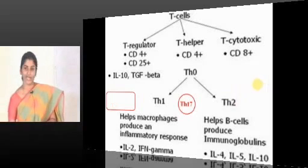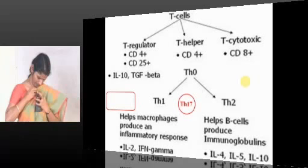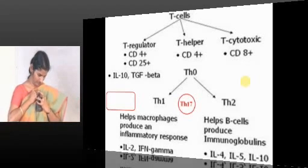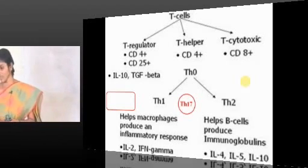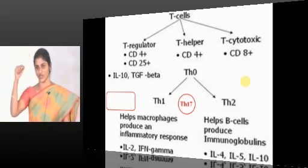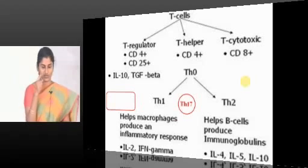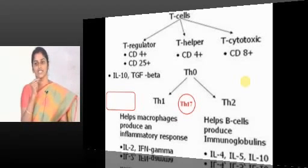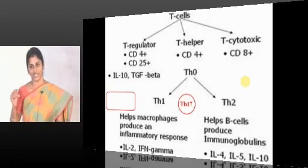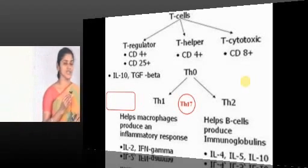Would you like to add anything else to the helper T-cell subsets? You can go back and correct your earlier answer. Helper T-cell subsets are TH1, TH2, TH17, and also adaptive immunity.